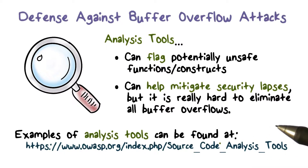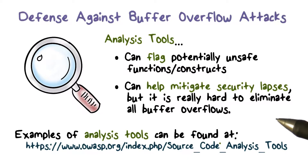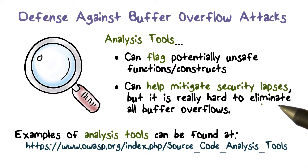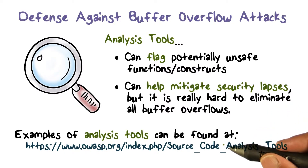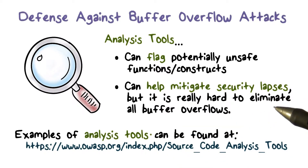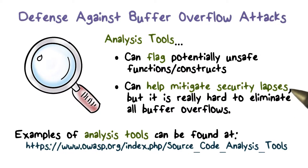The tools we were talking about can be found on the OWASP.org website. We're talking about source code analysis tools here, so we're making an assumption that you have the source code for the code you write, and you want to make sure it doesn't have those vulnerabilities. You run it through these tools.